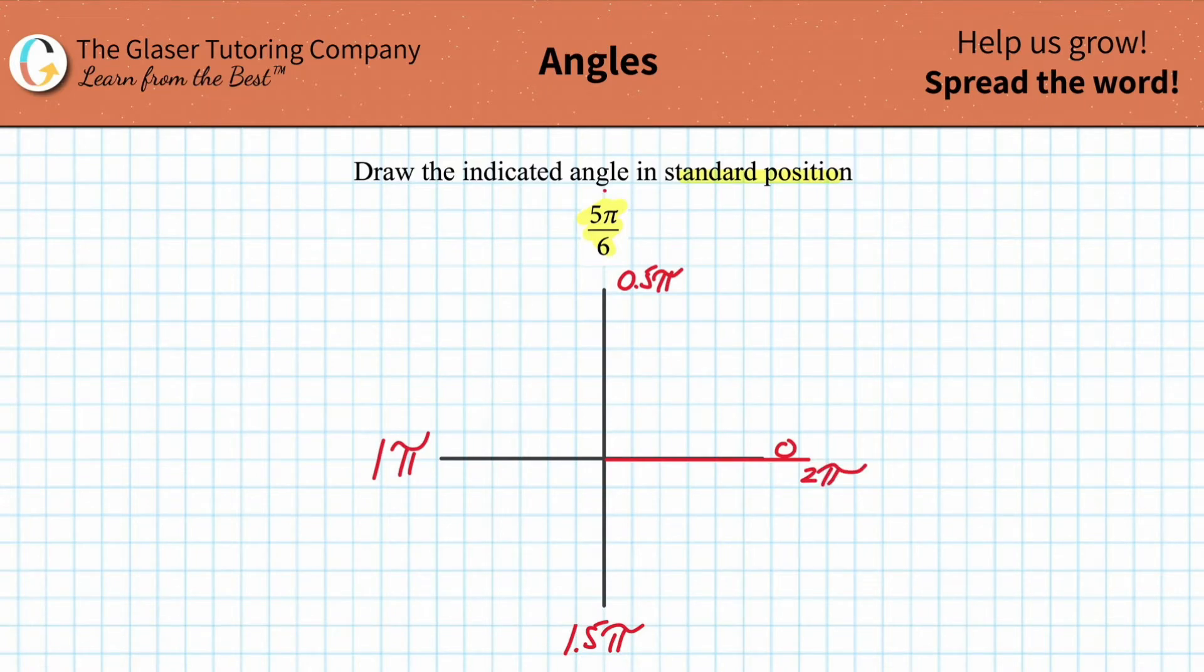Now, what we have to do is draw the angle of 5 sixth pi. So 5 sixths, that sounds like it's almost close to 1. You can plug this into the calculator if you want. And this value, if you had to put it into decimal terms, it would be 0.83-ish pi. So it's not a full pi. You have only 0.83. It's more than a half, but less than a full.